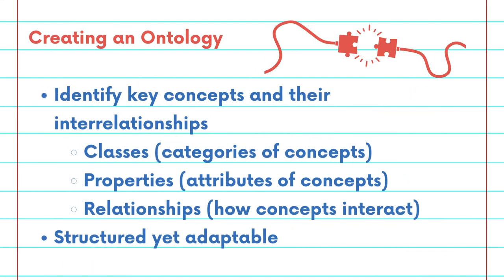Creating an ontology begins with identifying key concepts and their interrelationships. This includes defining classes or categories of concepts, properties or attributes of those concepts, and relationships, which is how the concepts interact. The goal is to encapsulate the core elements of a domain in a structured yet adaptable manner.